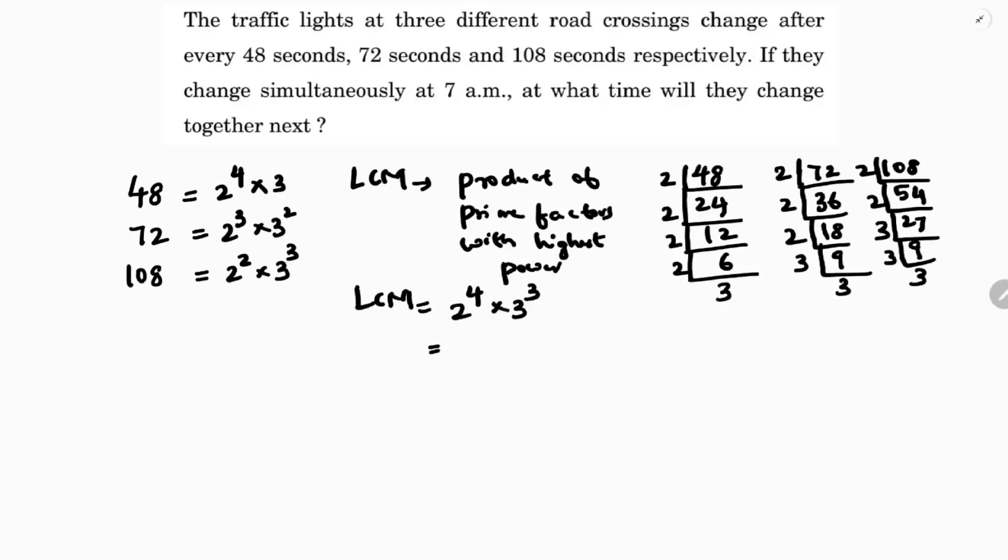In all of this, the highest power is 2 to the power 4 and 3 to the power 3. So 2 to the power 4 is 16, and 3 to the power 3 is 27. So 16 into 27 is 432.